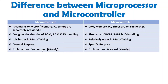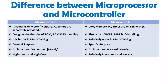When we talk about architecture, microprocessors mostly use Von Neumann architecture, though some microprocessors with Harvard architecture also exist. Microcontrollers mostly use Harvard architecture. Regarding speed and cost, a microprocessor operates at very high speed but also has a very high cost. A microcontroller has relatively lower cost as well as lower speed of operation.